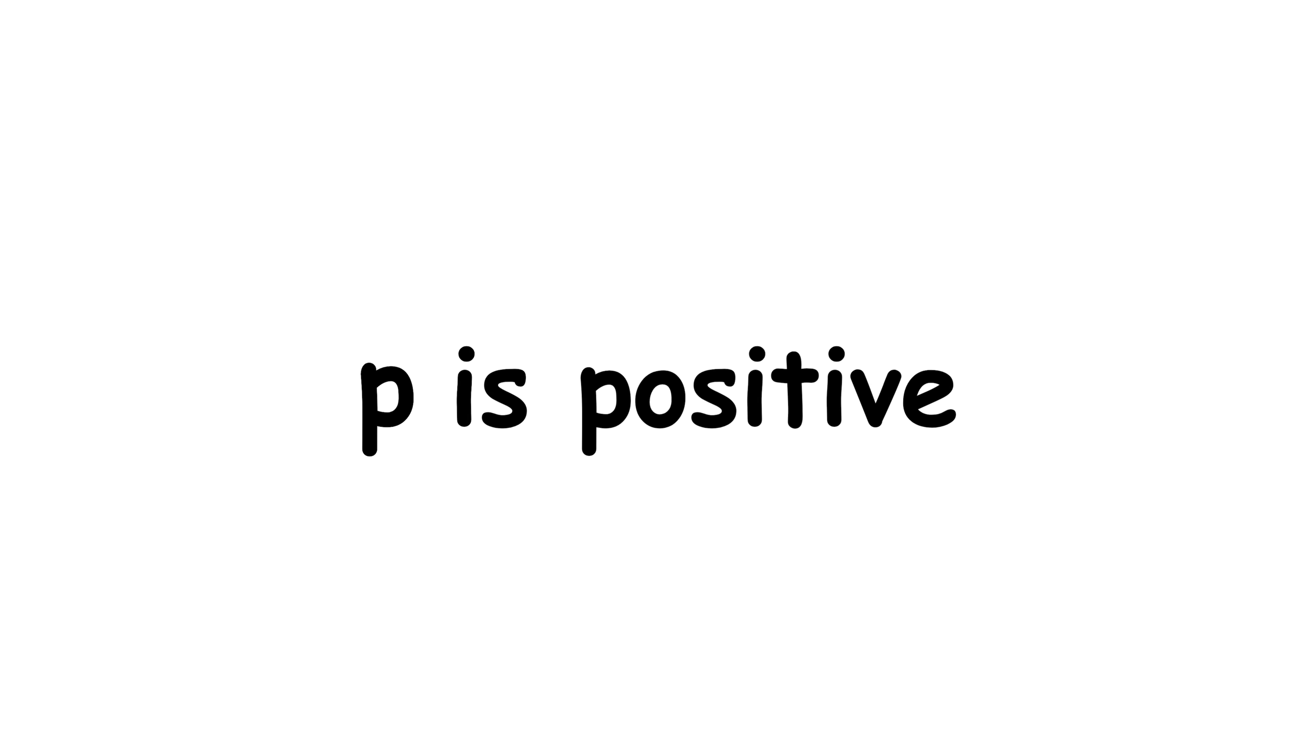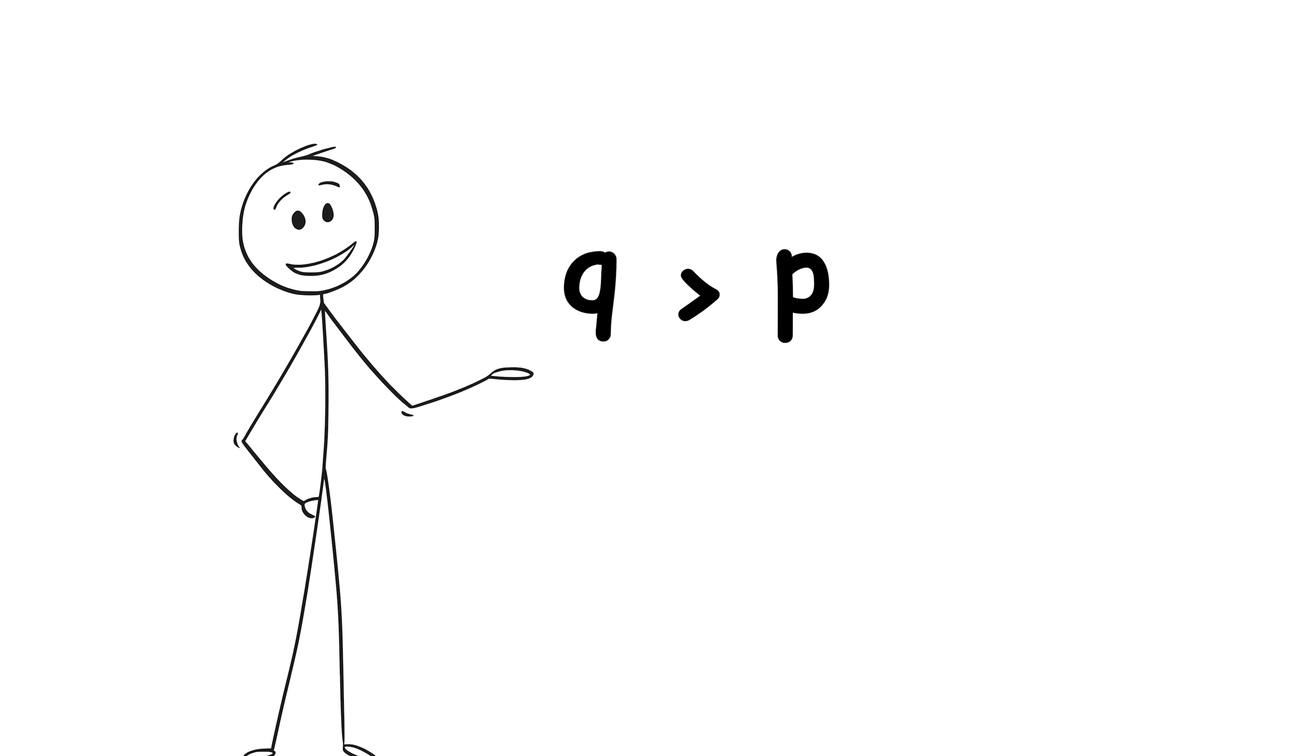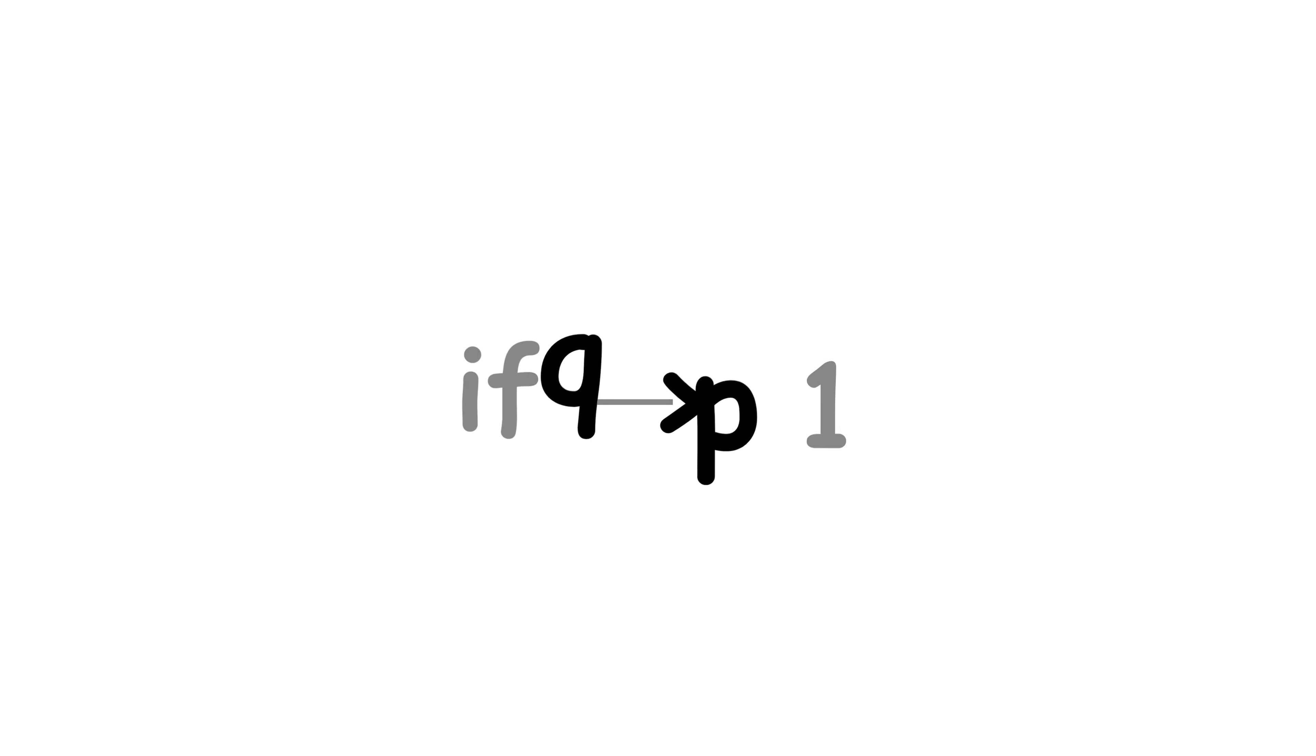We know that q over p is greater than 1, and since p is positive, we can multiply both sides of the inequality to find that q is greater than p. In general, if a ratio of positive numbers is greater than 1, then the numerator has to be bigger than the denominator.